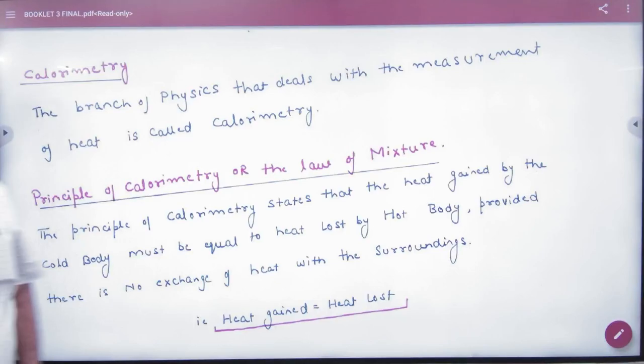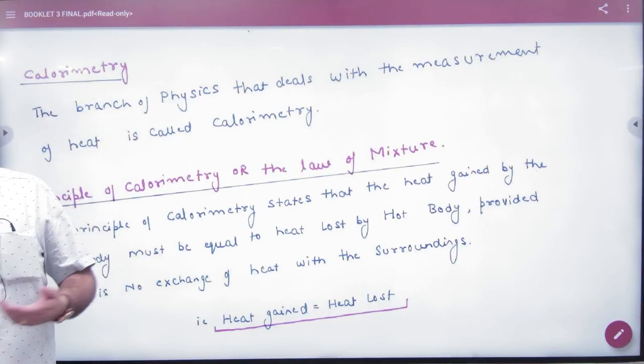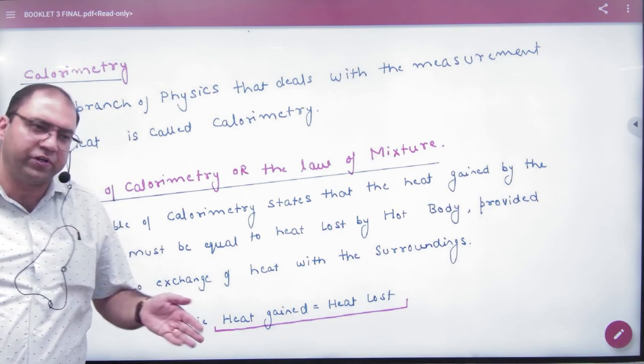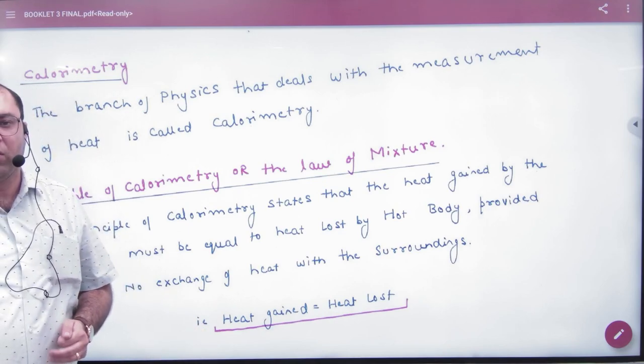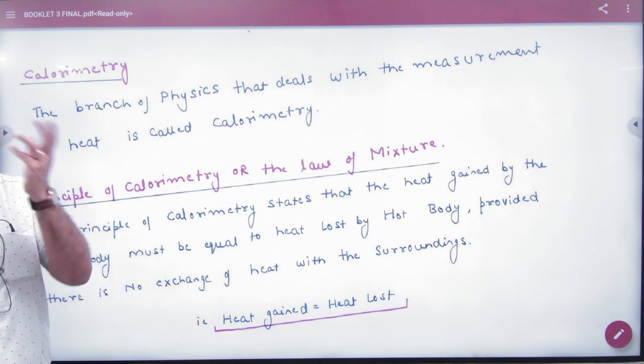Calorimetry is one branch. Optics is one branch where light is studied, kinematics is motion, mechanics is studied, and thermometry is studied temperature measurement.